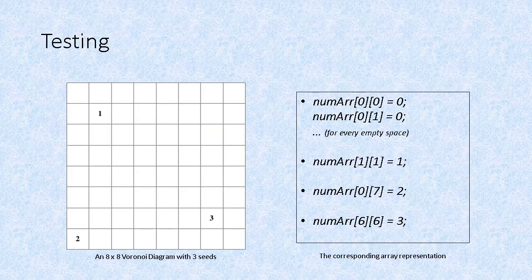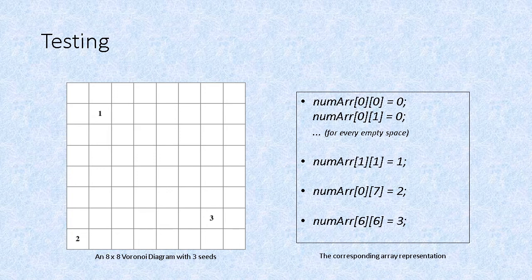We used array representations of Voronoi diagrams in a Java program to compare the speed of the naive one-at-a-time method with that of our divide-and-conquer method. We performed tests on diagrams of different sizes from 32 by 32 to 2048 by 2048 and with differing seed amounts from 10 to 100 seeds.